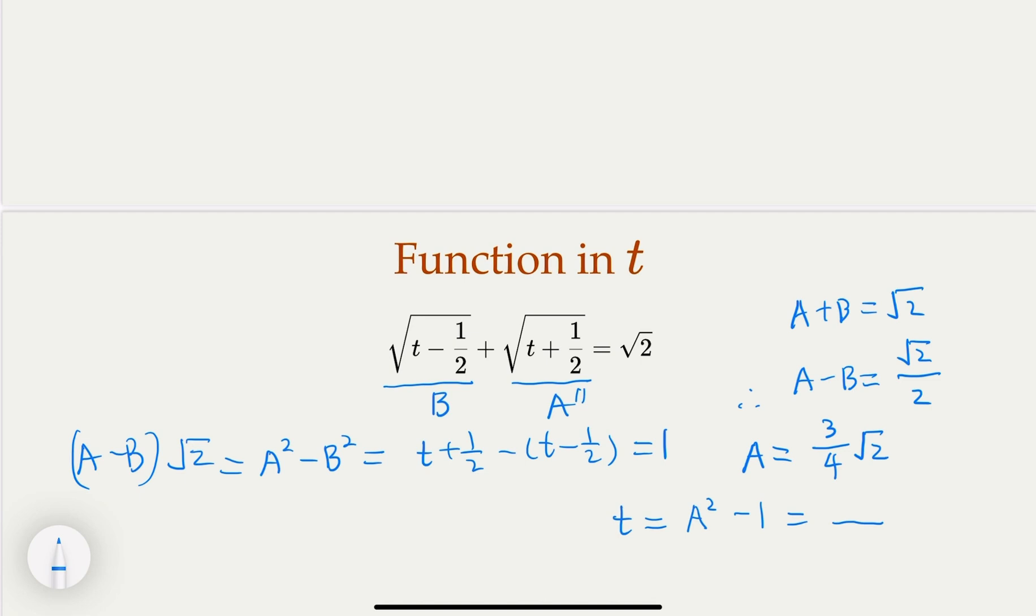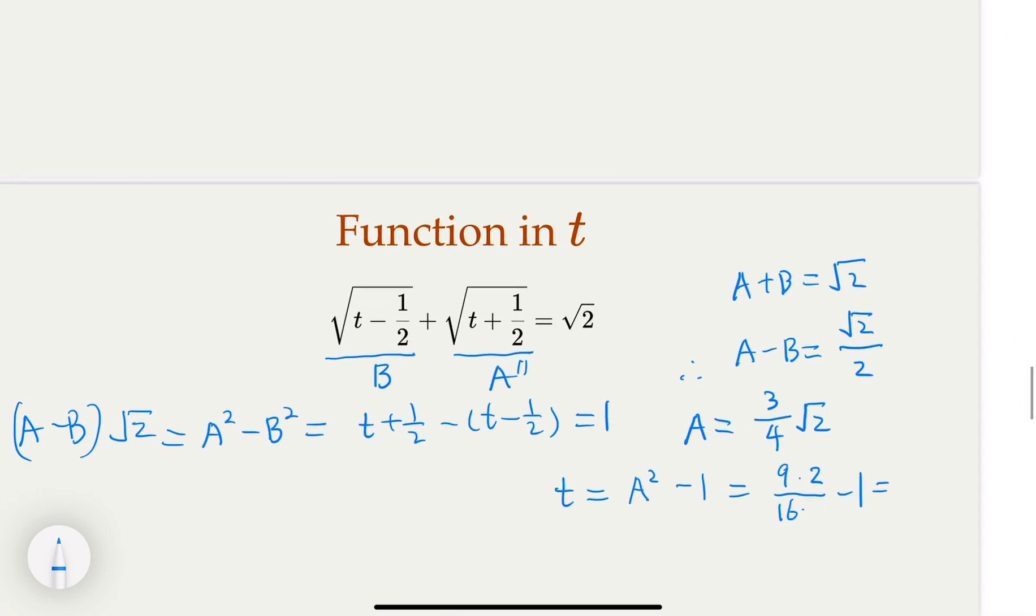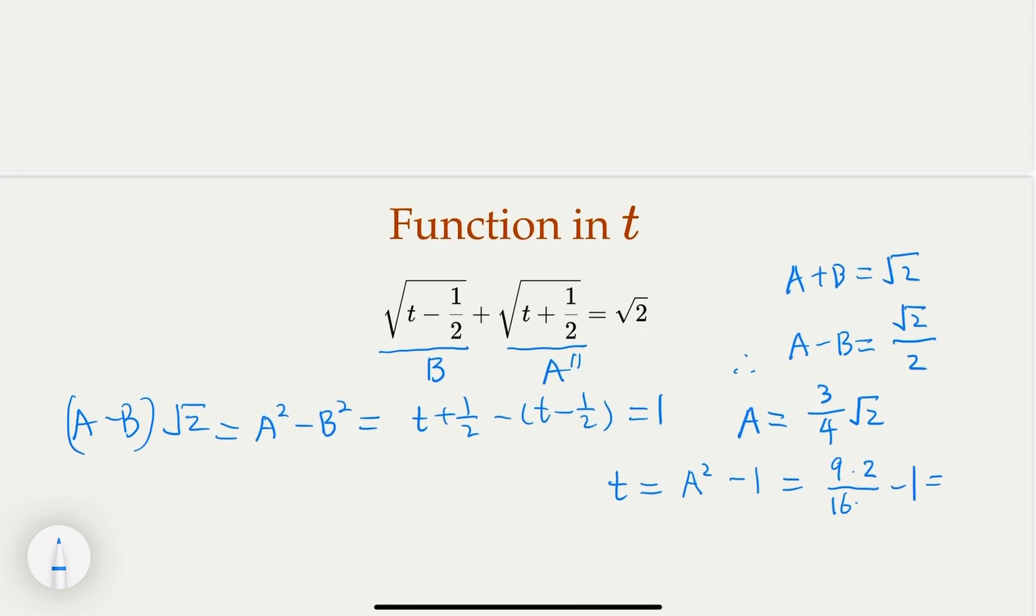which is 9 over 16 times 2 minus 1. That's 9/8 - 1. We got, let me see, is any algebra mistake? I'm sorry, minus 1/2. Okay, because t + 1/2 equals this. So minus 1/2, let's erase that. Minus 1/2. Minus 1/2. So that's 9/8 - 4/8 = 5/8. Alright, cool.